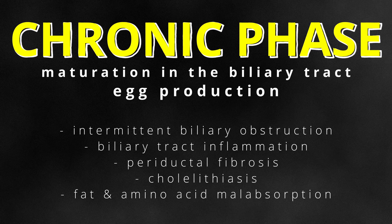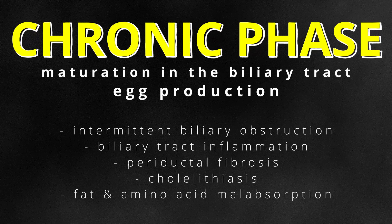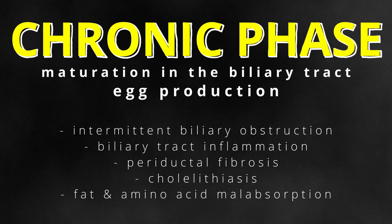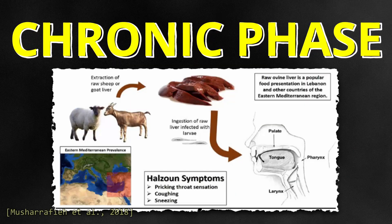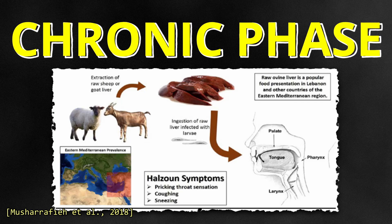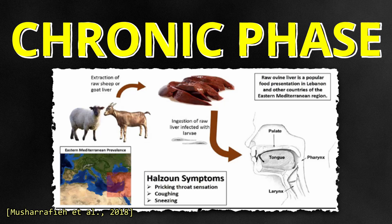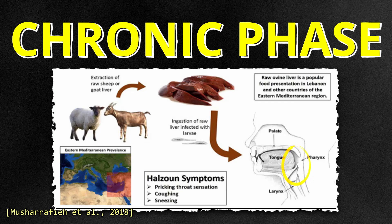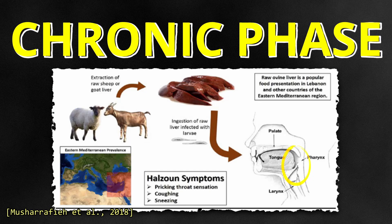In rare cases, the parasite may disseminate to other organs such as the lungs, brain, or eyes, particularly in severe or untreated infections. There are also rare cases of adult Fasciola worms being ingested from raw or improperly cooked liver. These adult flukes can attach to the posterior pharynx, causing pain, difficulty breathing, and even bleeding from the nasopharynx. This complication is called halzoon in Lebanon or marara in Sudan.